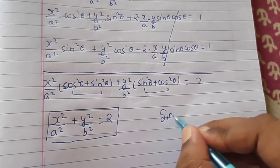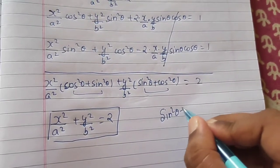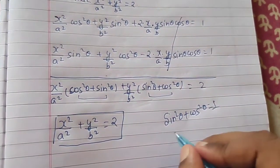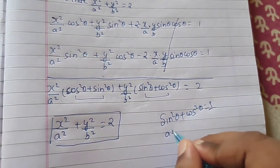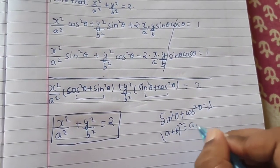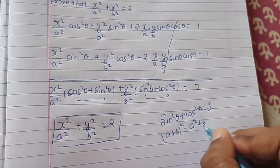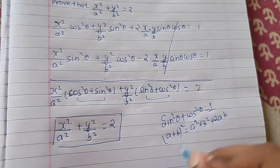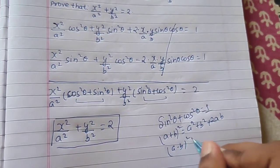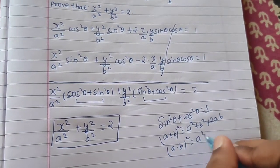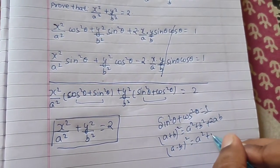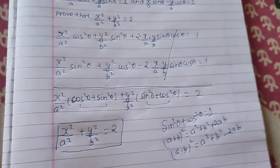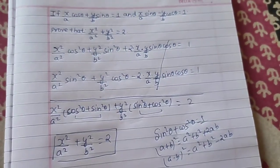The key identity used here is sin²θ + cos²θ = 1. Also recall that (a+b)² = a² + b² + 2ab and (a−b)² = a² + b² − 2ab. That's it.